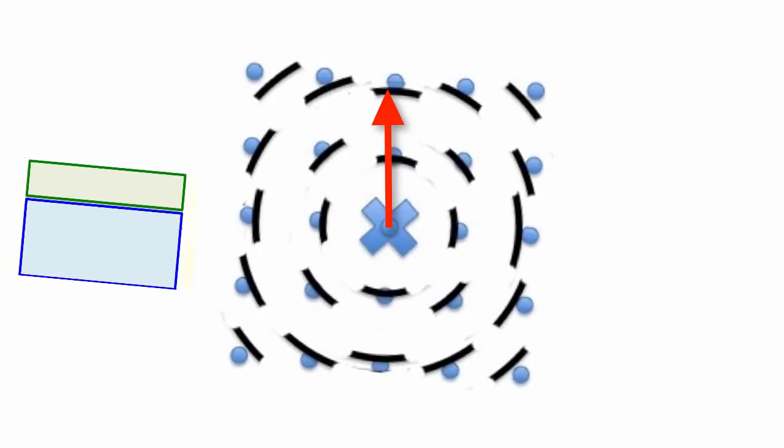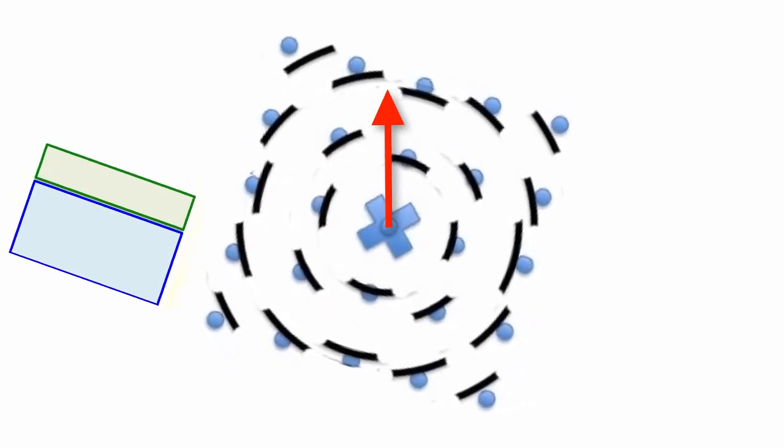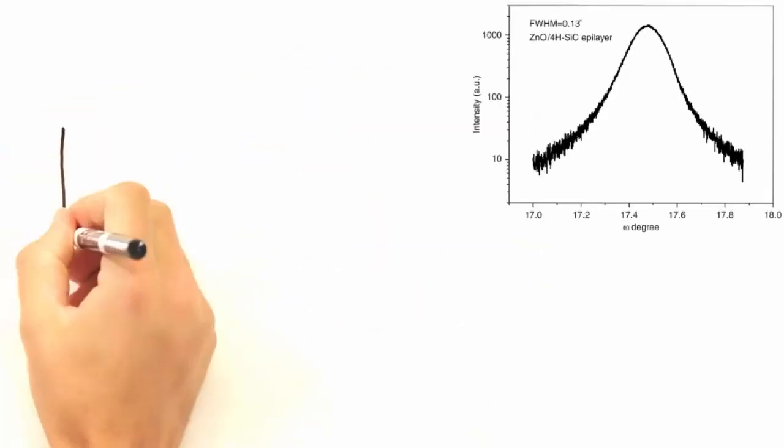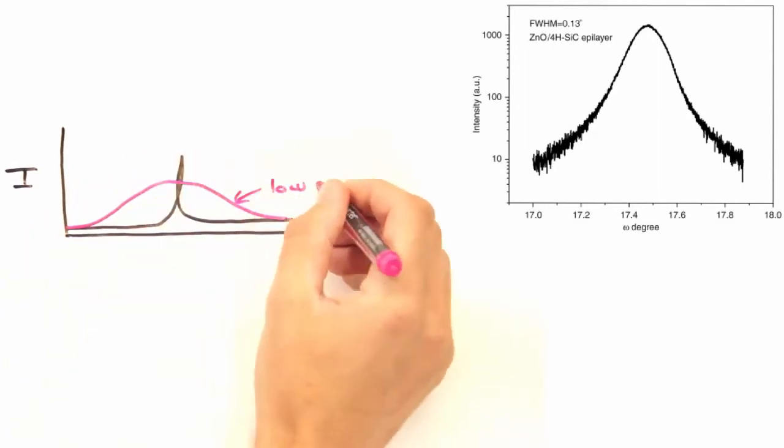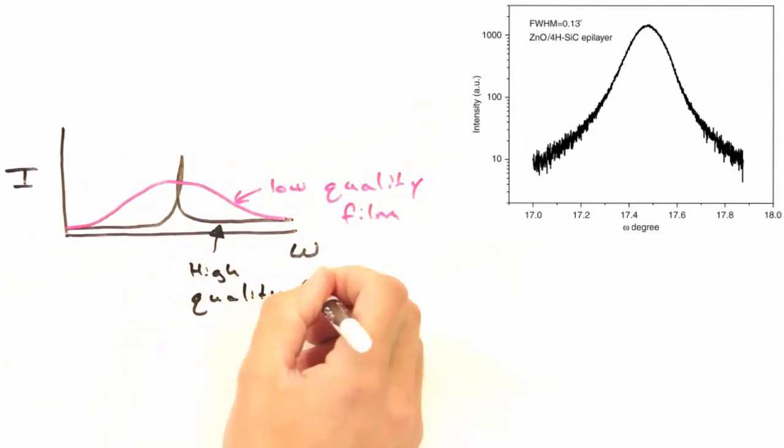This results in a spreading of our original delta function. And we use the full width half maximum value to get a quantitative measure of the amount of out of plane orientation.